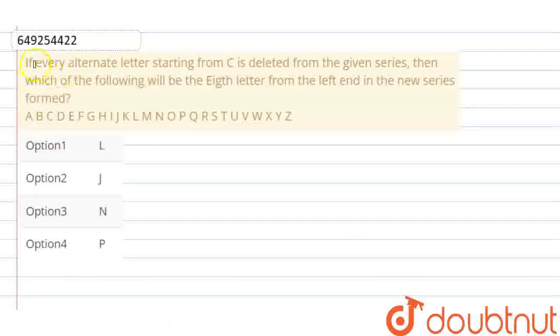Welcome to Doubtnet. Our question is: if every alternate letter starting from C is deleted from the given series, then which of the following will be the 8th letter from the left end in the new series formed?